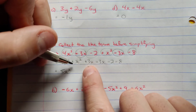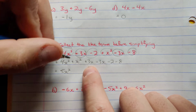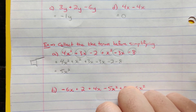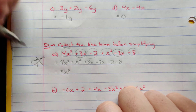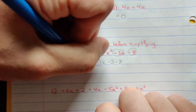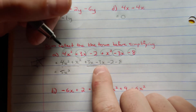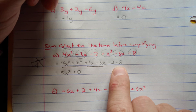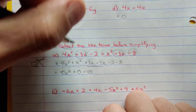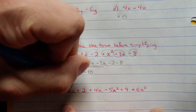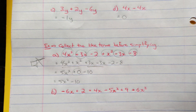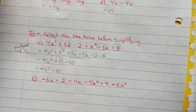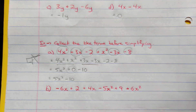Now simplifying: 4x squared plus x squared gives 5x squared. 3x minus 3x gives 0 — we can skip writing the zero. Negative 2 minus 8 gives negative 10. So the result is 5x squared minus 10. You don't need to include the zero term; it's just not needed here.